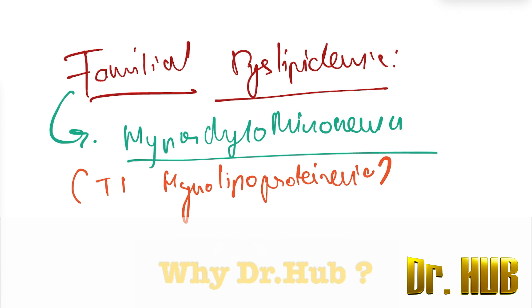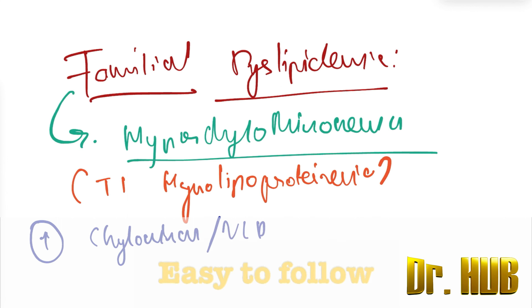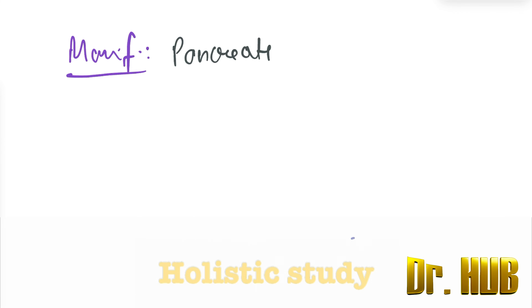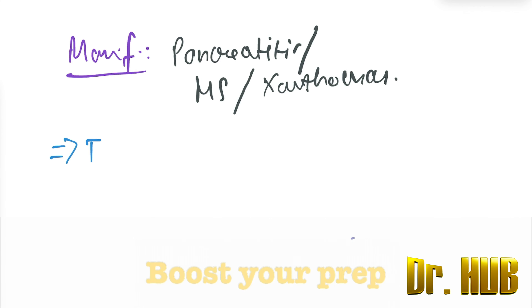In Type 1 hyperkylomicronemia, there are increased levels of chylomicrons, as well as increased levels of VLDL and triglycerides. The manifestations include pancreatitis, hepatosplenomegaly, and the presence of xanthomas.